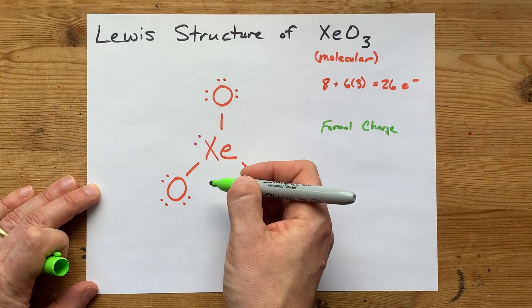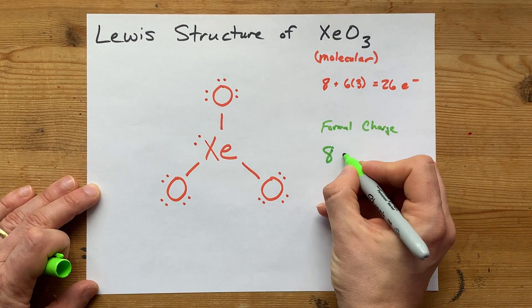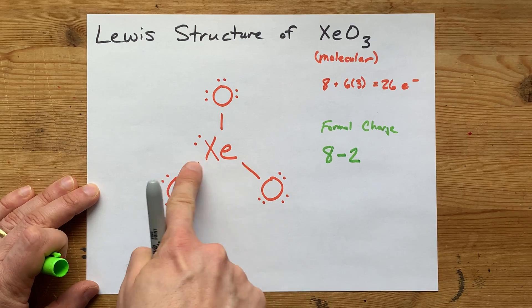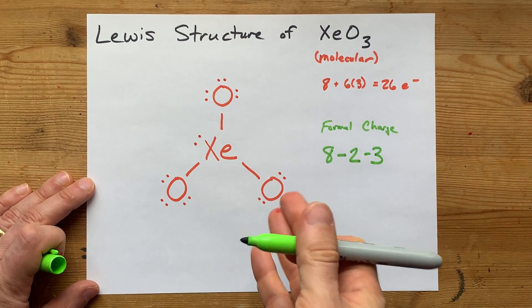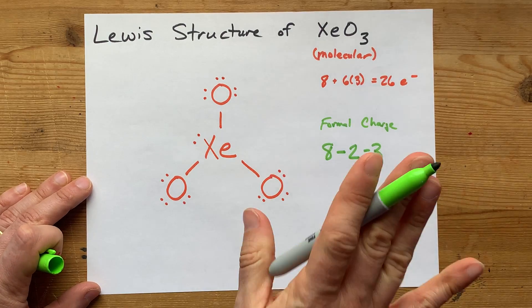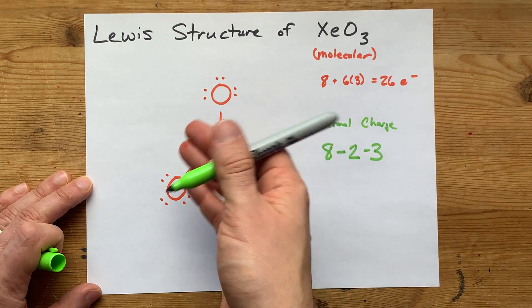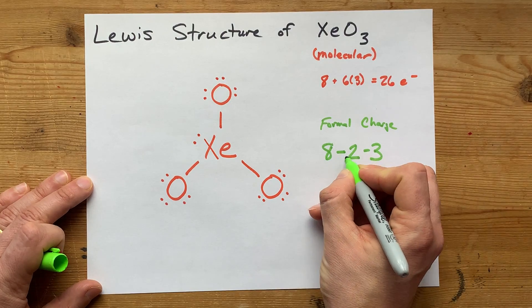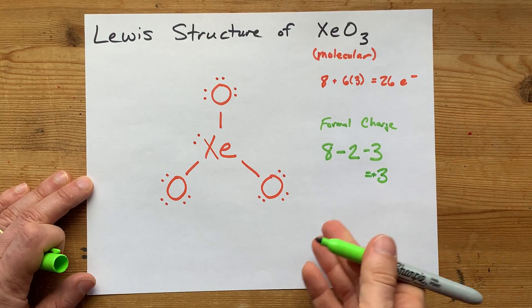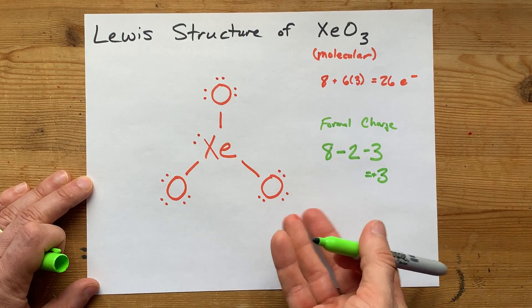Formal charge is calculated by taking the number of electrons that the atom brought, that's 8 for xenon, minus the number of dots that's around it, that's 2, minus the number of lines that's around it, that's 1, 2, 3. This is going to be an approximation for its approximate charge within the molecular compound. It's not an official charge. It's just some accounting we do to figure out if we want to form double and triple bonds here. 8 minus 2 minus 3 leaves me with 3, positive 3 as a formal charge. That's very high. If we can alleviate that by moving electrons towards the xenon, we're going to.